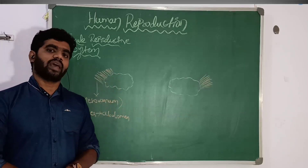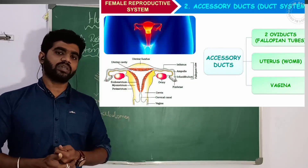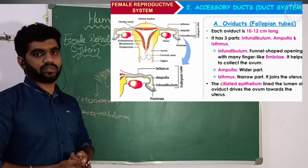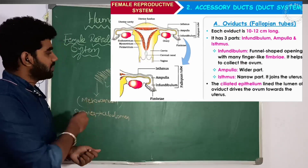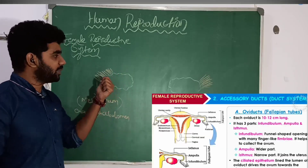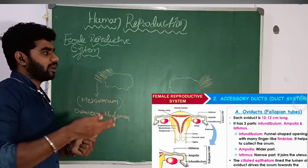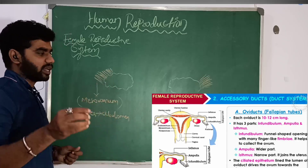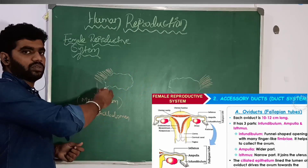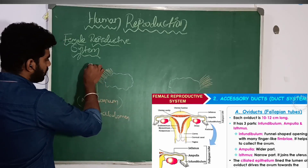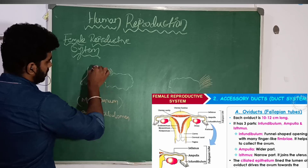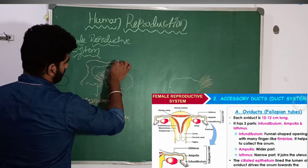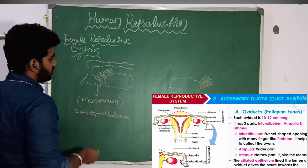Next we have to discuss about the accessory ducts. First we will take up the fallopian tube. A rough sketch will be drawn for each structure so you can understand, but for exams, practice the diagram as given in the textbook. There is a left and a right fallopian tube — they are the same structure.